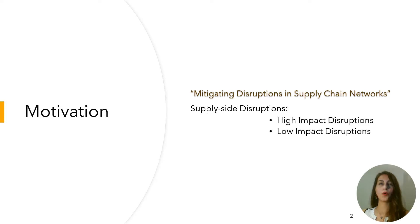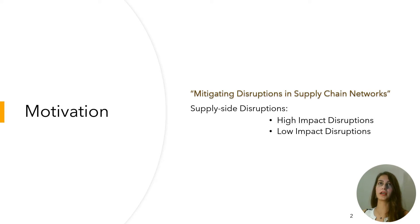Disruptions can affect all areas of supply chain, including supply or demand-side disruptions. It's important for companies to be prepared for sudden disruptions and mitigate financial risk. These various types of disruptions motivate me to design a complex supply chain network that experiences supply-side disruptions and assess the effect of long-term strategies to avoid the impacts of disruption uncertainties.